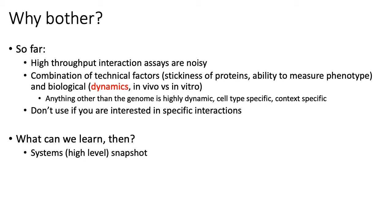A broader point here is that what makes studying networks, epigenomes, and transcriptomes so difficult is that measuring and analyzing anything other than DNA sequence is really hard. Everything other than genomic sequence is highly dynamic, highly cell-type specific, and highly context-specific. So in theory, to really understand what a certain protein is interacting with, you'd have to measure PPI networks across many different conditions.